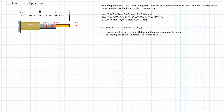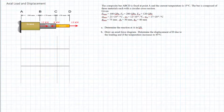We have the material properties: modulus of elasticity, the coefficient of thermal expansion, and the diameters for each of the sections given. We need to determine the reaction at A in kilonewtons, draw the axial force diagram, and determine the displacement at D due to both the loading and the temperature change if the temperature were to increase to 85 degrees Celsius — so from 15 degrees — meaning we'll have to figure out what delta T is.